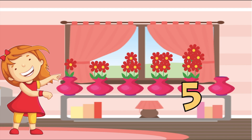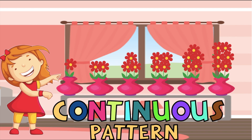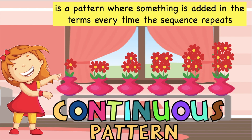So how many flowers are there on the sixth vase? Very good, children — we're going to have six flowers. This pattern is what we call the continuous pattern. When you say continuous pattern, it is a pattern where something is added in the terms every time the sequence repeats.